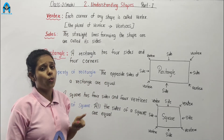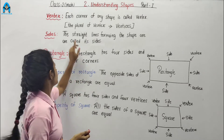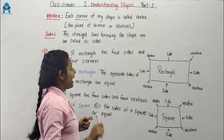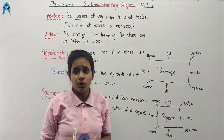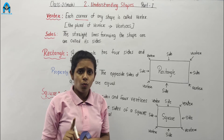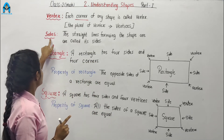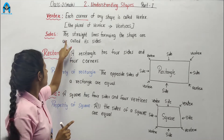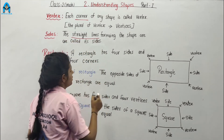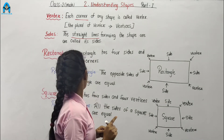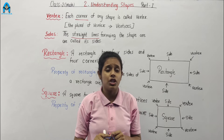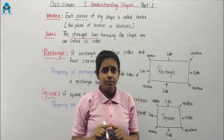First is vertex. What is vertex? Each corner of any shape is called vertex. Next, sides. What is sides? The straight lines forming the shape are called sides.